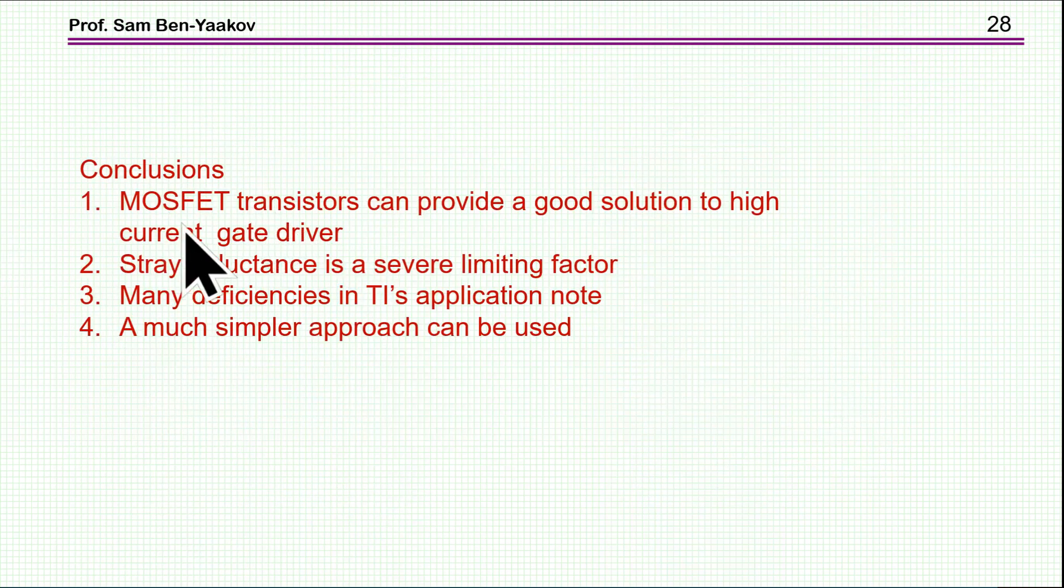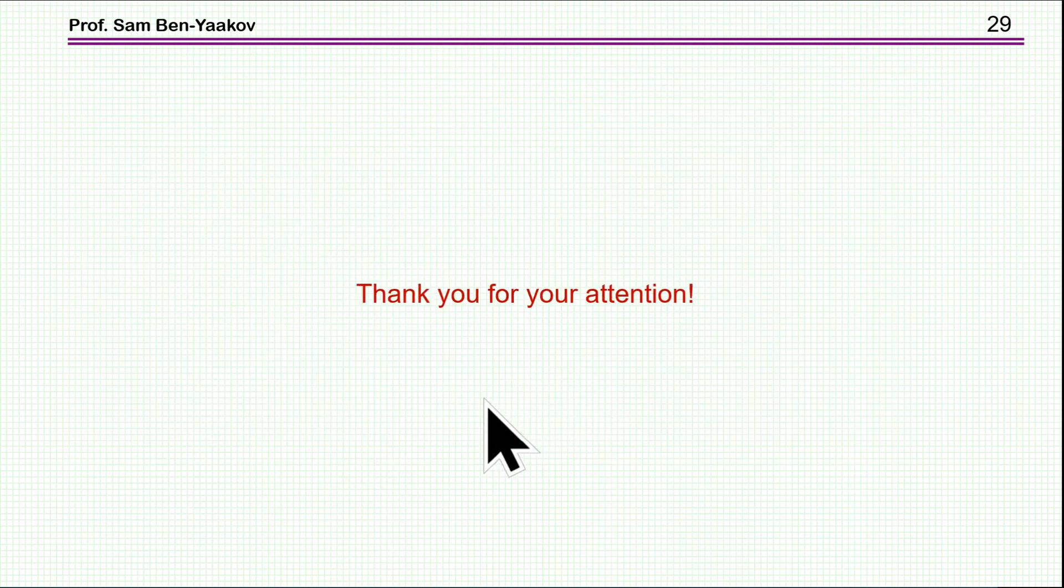So, what are the conclusions here? Well, MOSFET transistor really can provide a good solution to high-current-gauge driver. There's no question about that. MOSFET transistor is a good buffer. Now, stray inductance is a severe limiting factor in the drive. We know that. And I don't understand how come they have in this board 150 nanahertz. That's just too much. And I have found many other deficiencies in the TI application node, in this particular application node. And as I've shown, a much simpler approach can be used to overcome the shoot-through problem of two MOSFET transistor in a buffer. So, this brings me to the end of this presentation. I thank you very much for your attention. I hope you found it of interest, and perhaps it will be useful to you in the future. Thank you very much.